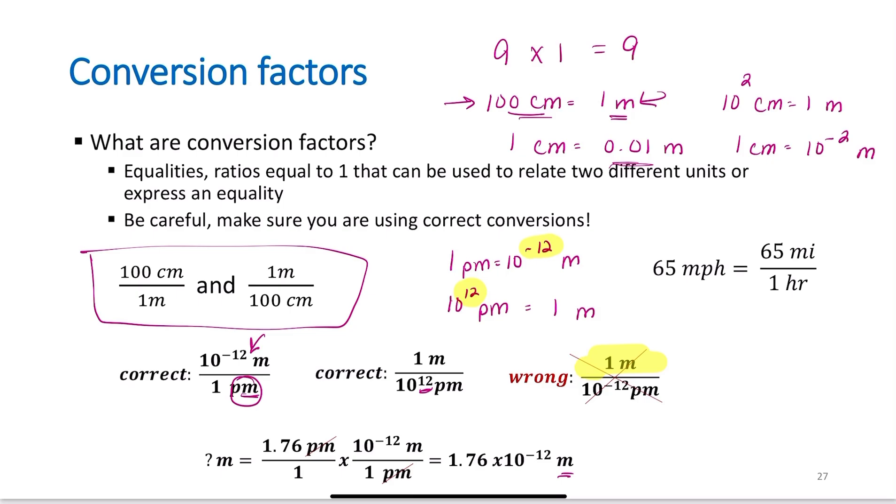The mistake students are going to make is this: they'll say one meter is 10 to the negative 12 picometers. That is not correct. The negative number needs to go to the bigger measurement. The positive number goes to the smaller measurement.